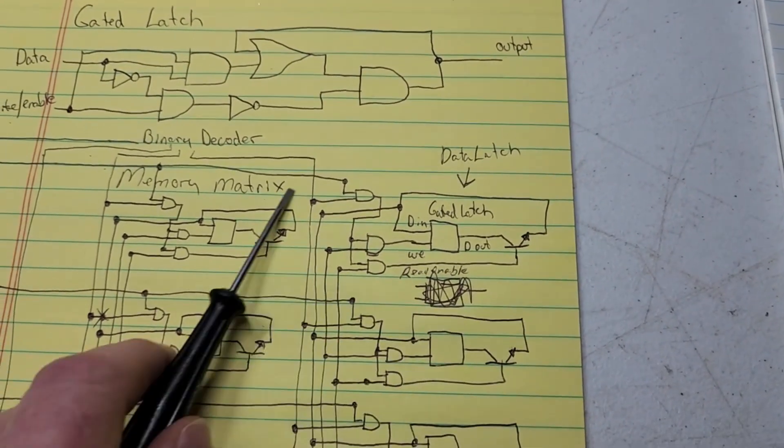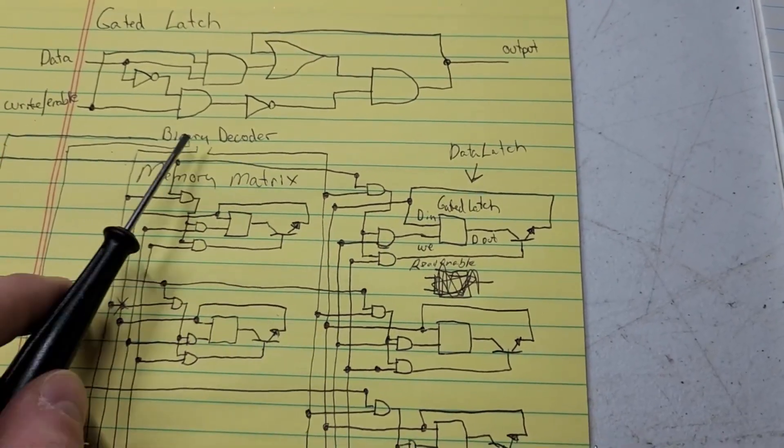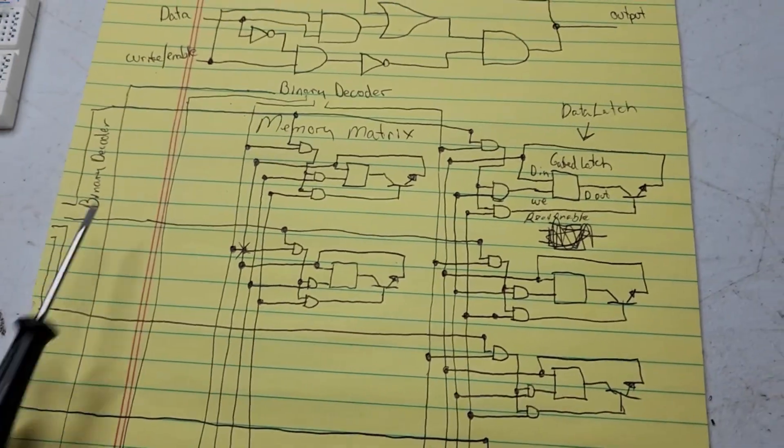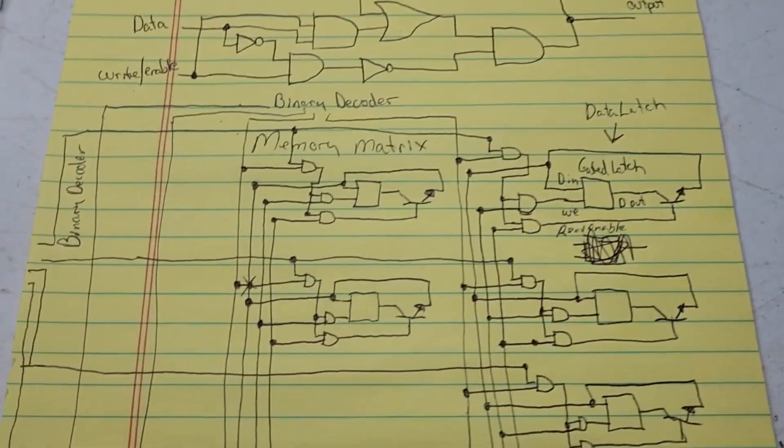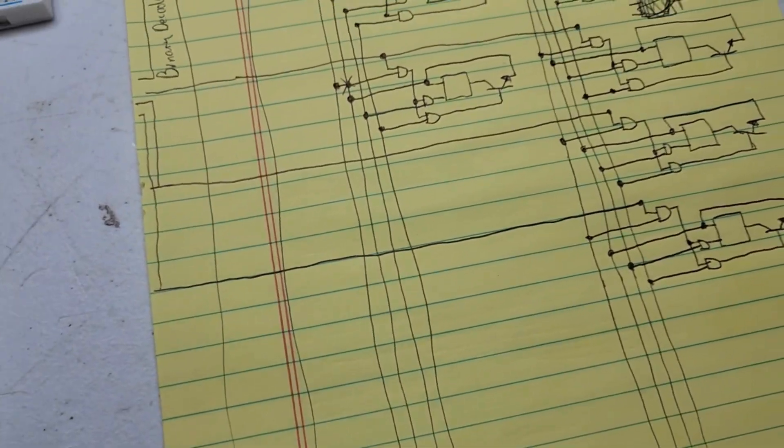So that's, you know, that's how each bit is going to work and that's how I can use these binary decoders to select which one I want to read from or write to. Okay, so that seems a little confusing, but it's really not.